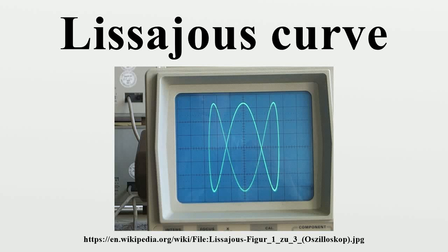In mathematics, a Lissajou curve — also known as a Lissajou figure or Bowditch curve — is the graph of a system of parametric equations which describe complex harmonic motion.